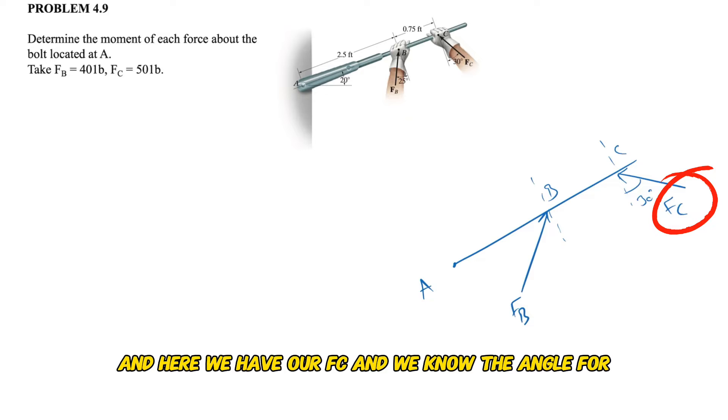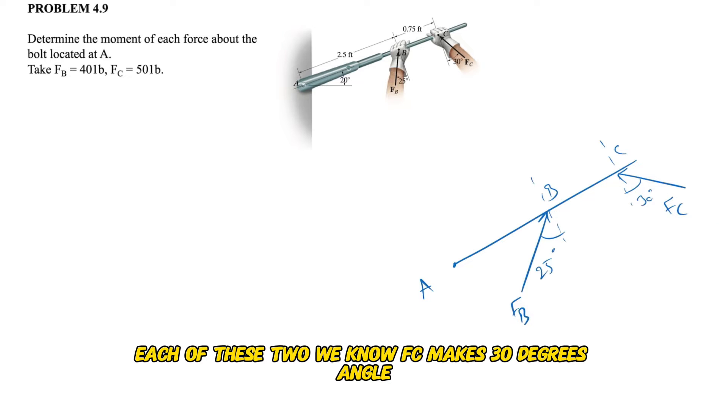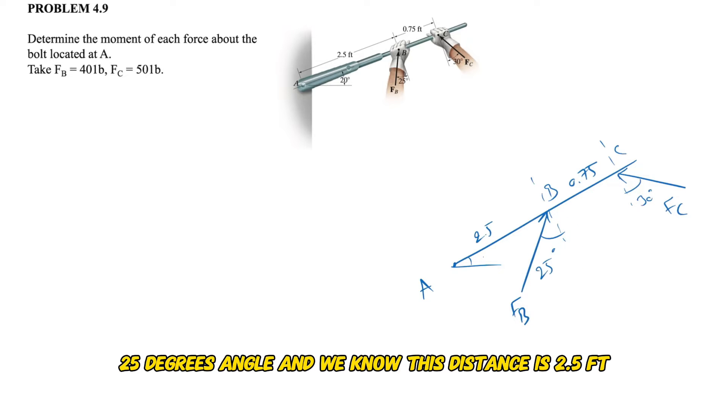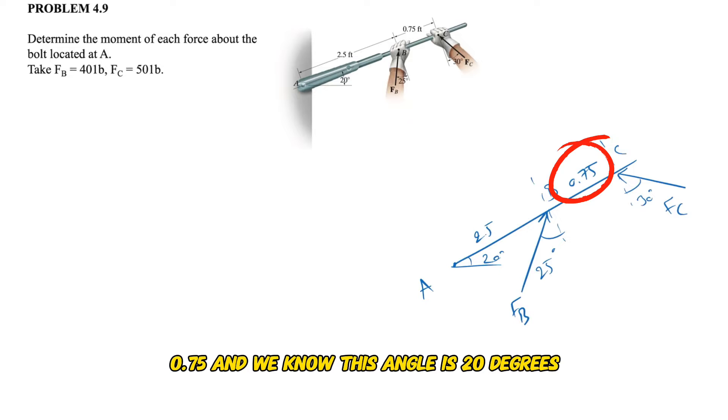We know the angle for each of these two: Fc makes 30 degrees angle with the dotted line and Fb will make 25 degrees angle. We know this distance is 2.5 feet, 0.75, and we know this angle is 20 degrees.